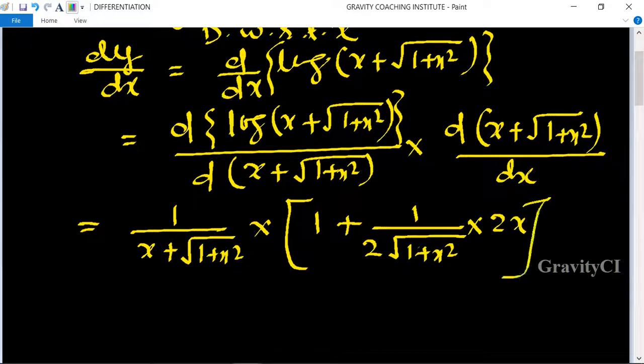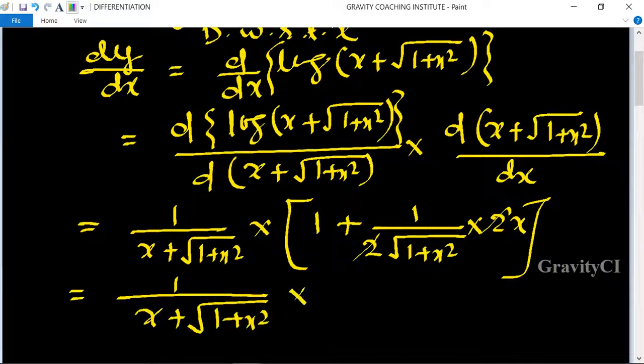The derivative gives 2x, so the two cancels. (x + √(1+x²)) multiplies... This gives us (1+x²), and then (x + √(1+x²)).